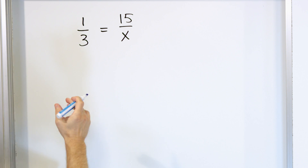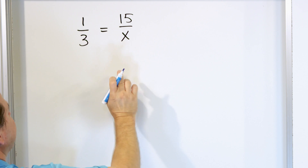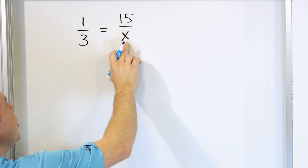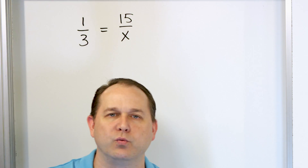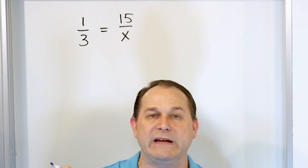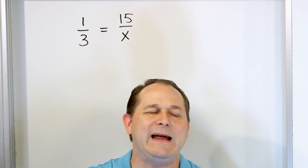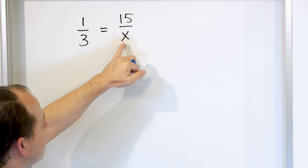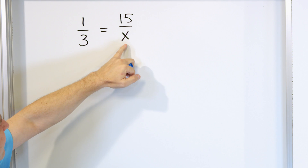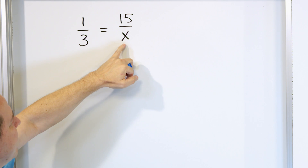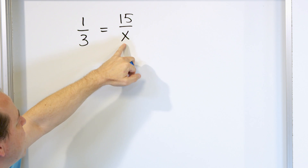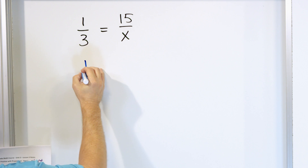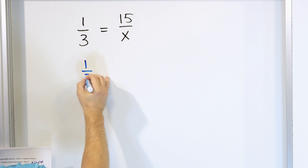We also call that the same ratio. We've been talking about the example of boys to girls in a room. If we have one boy for every three girls, then if we encounter 15 boys, how many girls should we have in the group to have the same ratio? In order to solve this, we have to get the unknown number x by itself on one side of the equal sign.